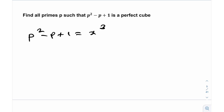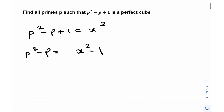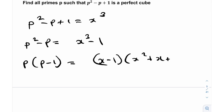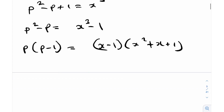If I send the 1 to the right-hand side it becomes a factorizable expression — in number theory, if you can factorize, it's probably good to do that. So p² - p = x³ - 1, which factorizes as p(p - 1) = (x - 1)(x² + x + 1). That's a standard factorization of x³ - 1.